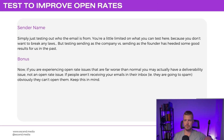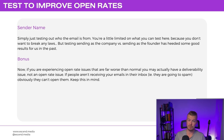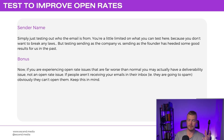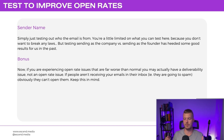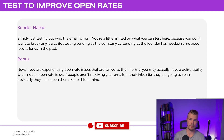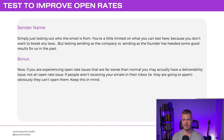Sender name is another variable to test — who the email is actually coming from. You can test sending from your own name as the founder versus sending as the company. There are different times you might use either one — for a more sentimental message, sending as the founder can work well. Bonus: if your open rates are far worse than normal, you may actually have a deliverability issue — if emails are going to spam, people obviously can't open them.